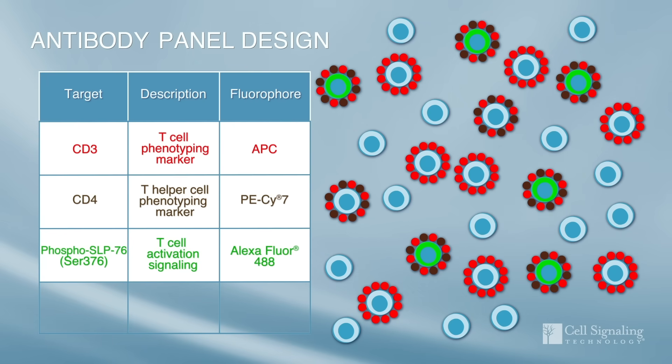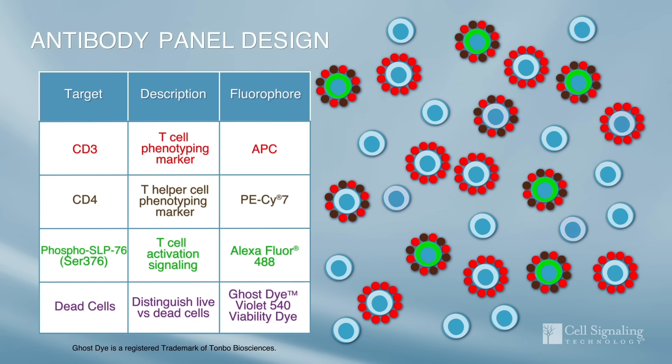Finally consider incorporating a live-dead viability stain such as a Ghost Dye in your panel to allow exclusion of dead cells from analysis.